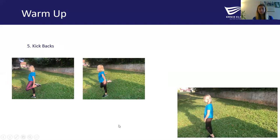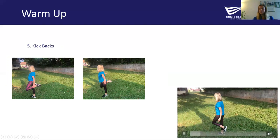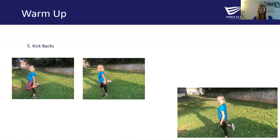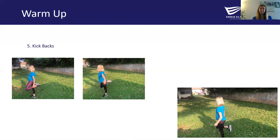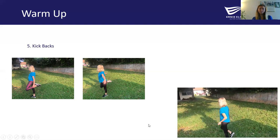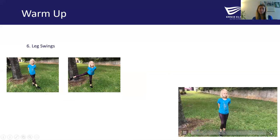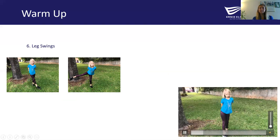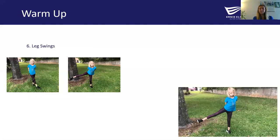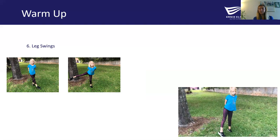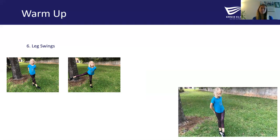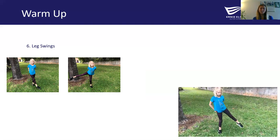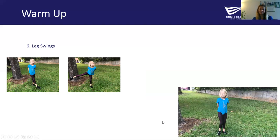Then we have our kickbacks. With this one, you want to make sure your knees are staying in line with each other. You've got a nice proud chest — chest is up, head is neutral — and we're just kicking our feet back for 30 seconds. Then we have our leg swings: stand on one leg, bring the other leg past the midline of your body in front of that standing leg, and then swing it out to the side. Make sure you do both legs, doing about 10 to 12 repetitions for each side before you switch. And that is our warm-up.